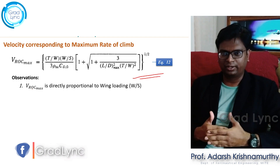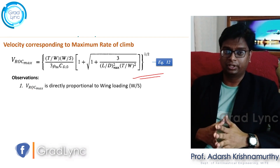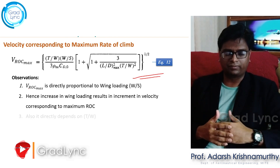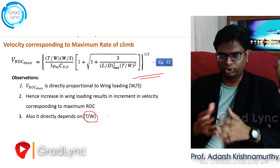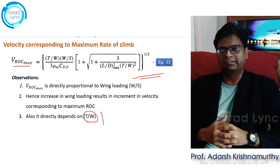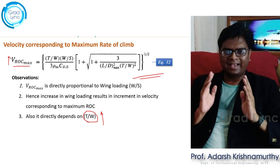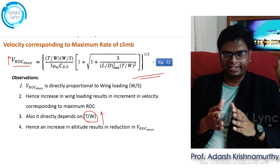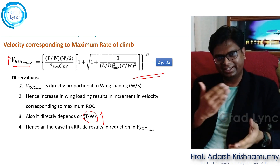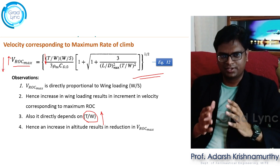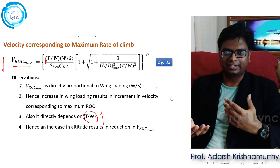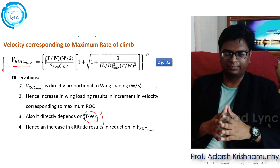The first observation is that the velocity corresponding to maximum rate of climb is directly proportional to wing loading — the ratio of net weight of the aircraft to the planform area of the wing. Higher the wing loading, higher will be the velocity corresponding to maximum rate of climb. Also, the velocity depends on thrust-to-weight ratio — higher the thrust-to-weight ratio, higher the velocity. However, as altitude increases, density decreases, causing thrust-to-weight ratio to decrease, which results in a decrement of the velocity corresponding to maximum rate of climb.